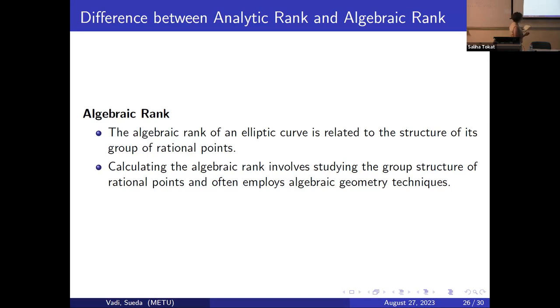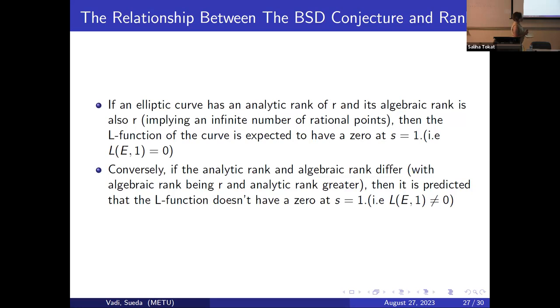According to the BSD conjecture, if the L-function of an elliptic curve has a zero at s equals 1, it suggests that the curve has an infinite number of rational points. We have that an elliptic curve has analytic rank r which is also equal to its algebraic rank r. This implies that we have an infinite number of rational points, and then we can reach that the L-function L(E, s) at s equals 1 is zero. Conversely, if the analytic rank and algebraic rank are different, then it predicts the L-function does not have a zero at s equals 1.